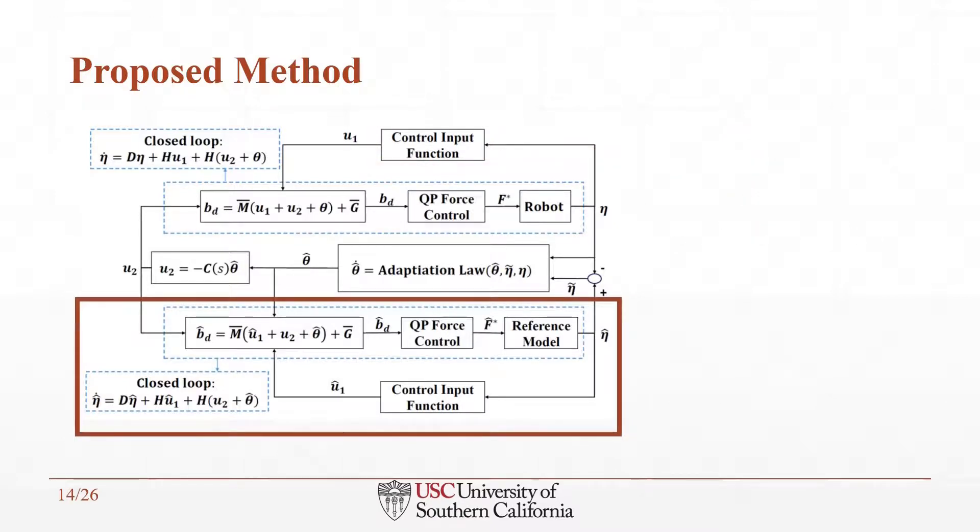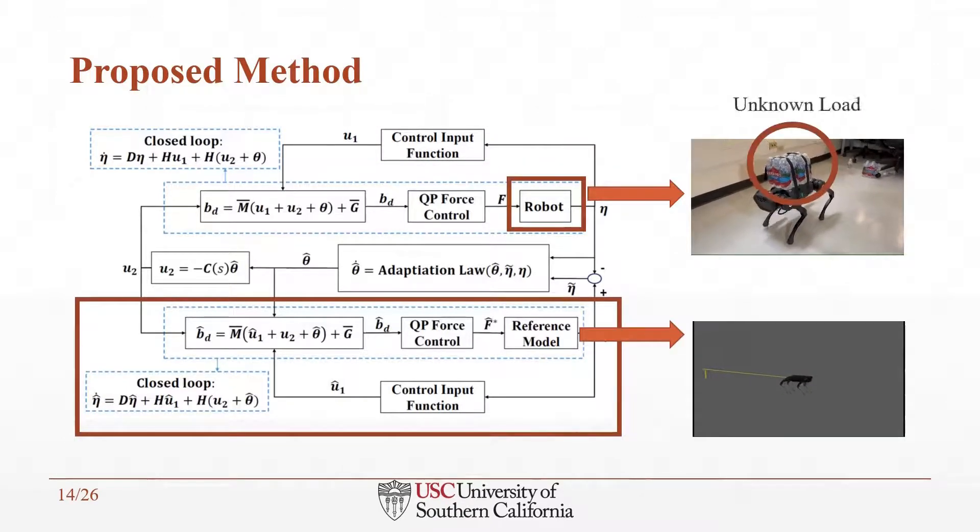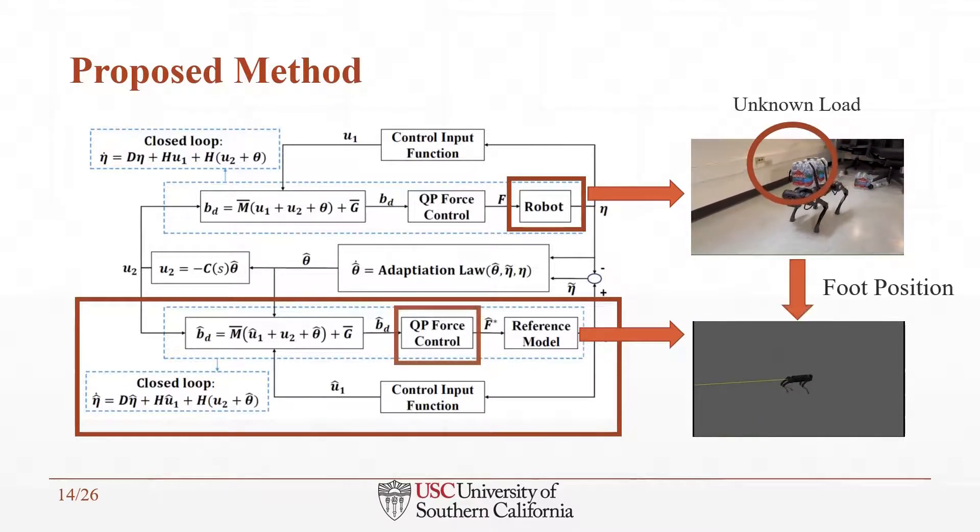Here is our reference model. As I mentioned before, the structure of the reference model is the same as the real model, and the only difference is the uncertainty. The robot model contains unknown uncertainty. However, the reference model is built based on our knowledge about the system. For example, in this video, the robot carries an unknown load which represents the model uncertainty. However, some data from the reference model has been gotten from the real model, such as foot position which are required for the QP force control part which extracts from the real model directly.